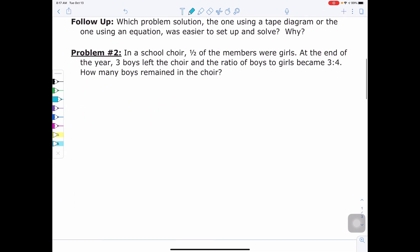All right, now problem two. It says, in a school choir, half of the members were girls. At the end of the year, three boys left the choir and the ratio of boys to girls became three to four. How many boys remained in the choir? So we have to think about setting up a ratio, which means we're going to have some fractions, which means we're probably going to need to use some type of proportion.